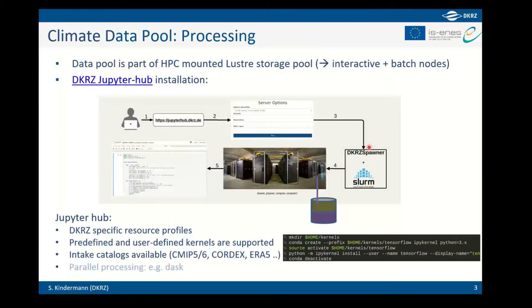The pool is in the HPC data store, the same way as any other data such as your personal home data — it's in the normal Lustre storage pool associated with the HPC system. You can spawn Jupyter notebooks by going to https://jupyterhub.dkrz.de, where you can select the profile — specific memory and number of cores — to spawn your notebook on the HPC system.